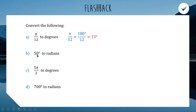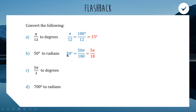Any π represents 180 degrees. Going backwards: 50 degrees to radians. We want to express 50 degrees as a fraction out of 180 and then put a π on it. So 50 degrees can be written as 50π/180 radians. Simplifying by dividing top and bottom by 10, we get 5π/18 radians.